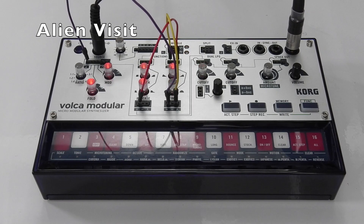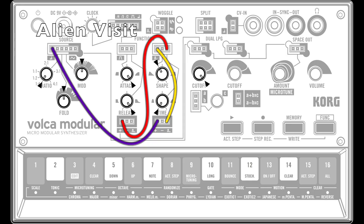Alien Visit. This is similar to the previous patch but here Function 1 is controlling the time parameter of Function 2, and Function 2 is controlling the pitch of the carrier wave. So as we play and release a note, the rate of change of the pitch of the carrier wave changes from faster to slower.